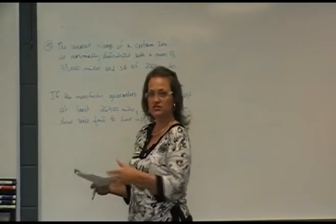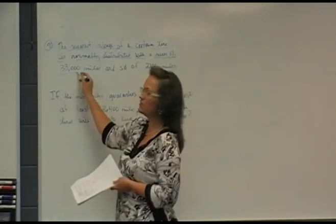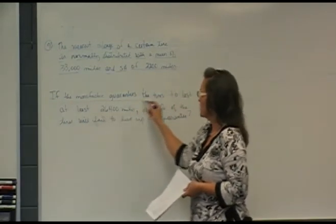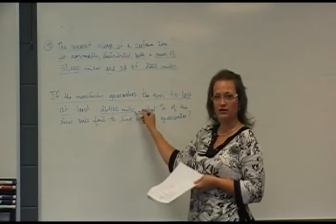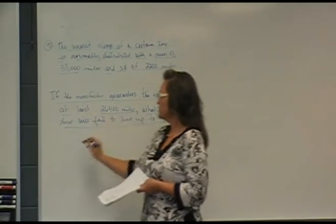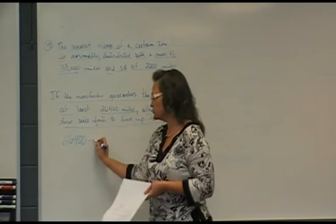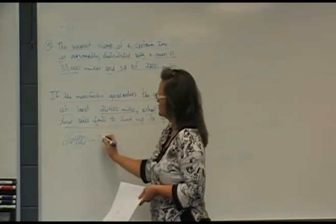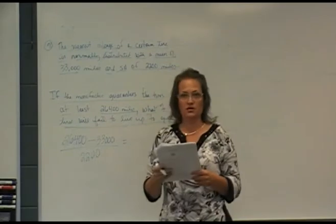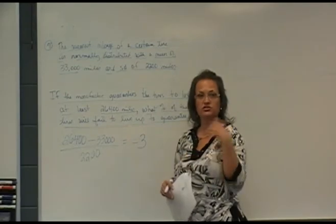These are all similar ideas using the Z score table. Number 70 is the wear out mileage of a certain tire is normally distributed with a mean of 33,000 miles and a standard deviation of 2,200 miles. Our question then is if the manufacturer guarantees the tires to last at least 26,400 miles, that's our raw data, what percent of the tires will fail to live up to that guarantee. I need to convert my raw data, 26,400 into a Z score so I can use the table. The formula is we subtract the mean from that, given in the problem is 33,000 miles, divided by the standard deviation, again given, that's 2,200. And that calculates out to be a negative 3, negative 3 standard deviations, so 3 below the mean.